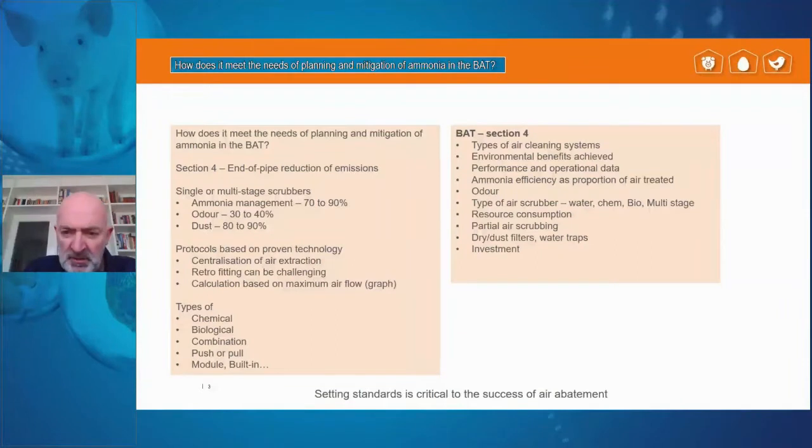At the end, I'll give a little bit of evidence through an example of how that works. So, first of all, the BAT. Well, the section that we're really referring to in the BAT is a 40 page document, which in short covers the types of air cleaning systems available today, the environmental benefits that can be achieved through air scrubbing, performance and operational data about those environment benefits. A little bit about ammonia efficiency as a proportion of air treated. This is quite an important point when designing air scrubbing.